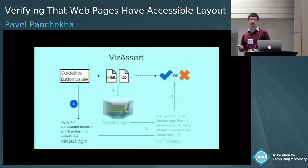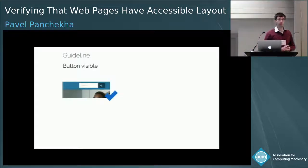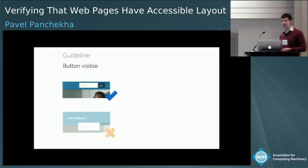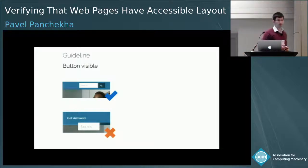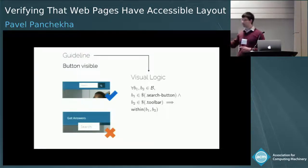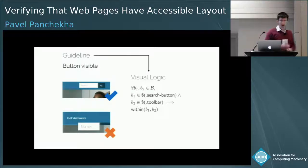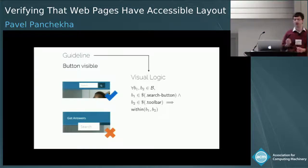When we think about a guideline for how a web page should look, we are thinking about good behaviors — like where that search button is within the blue toolbar — and bad behaviors, like where it is occluded. Visual logic is a way to write down the property that separates good from bad. For example, here I've given an assertion that introduces two boxes of interest — that's the 'for all B1, B2.' Then it constrains B1 to be the search button and B2 to be the toolbar using a CSS selector, and finally requires that the search button be geometrically contained within the toolbar.